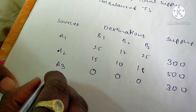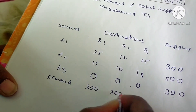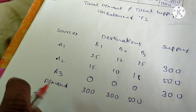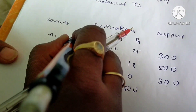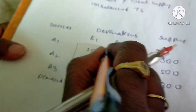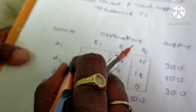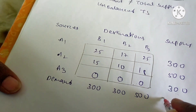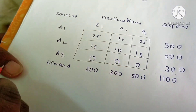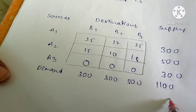We introduce 300 units in the dummy row to balance the transportation problem and write the remaining demand values. Now check: total demand is 1100 and total supply is also 1100 — the problem is now balanced.